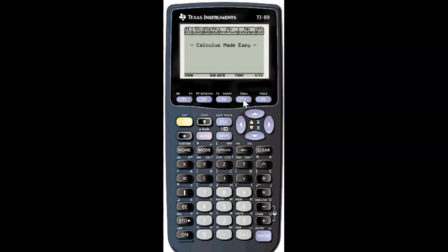To do volume on Calculus Made Easy, go to F6 and then scroll down until you find volume.